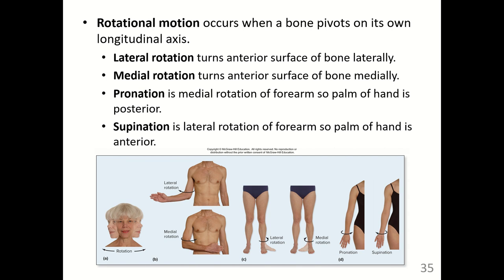Rotational motion occurs when a bone pivots on its own longitudinal axis. Lateral rotation turns the anterior surface of the bone laterally, and medial rotation turns the anterior surface medially, as shown in figure B with the arm. Pronation is the medial rotation of the forearm so the palm of the hand faces posterior, while supination is shown in figure D. Figure A shows the rotation of the atlas and axis, and figure C shows the lateral and medial rotation of the lower leg.